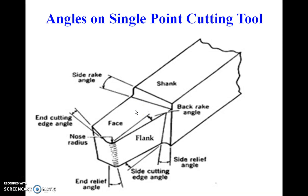These rake angles are provided for many purposes: first, to reduce the cutting forces during the machining process; second, to reduce the power consumption; and third, to easily flow the chip from the cutting zone. All these are provided to improve the tool life of the cutting tool. The end relief angle is the angle between the end of the cutting tool and the normal to the base. The side relief angle is the angle between one end of the flank and the lower portion of the shank.